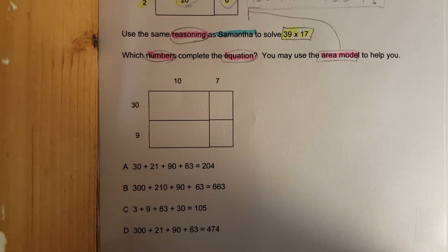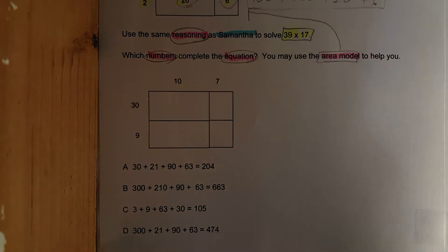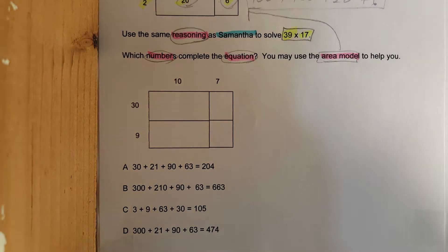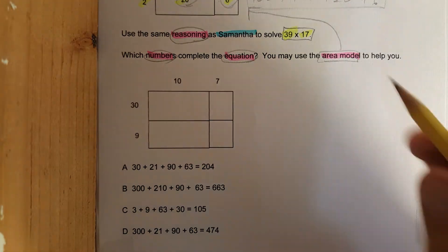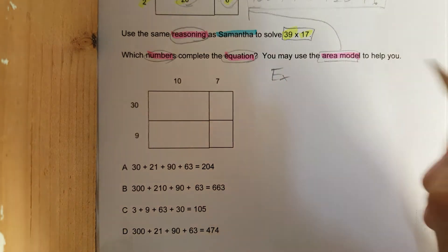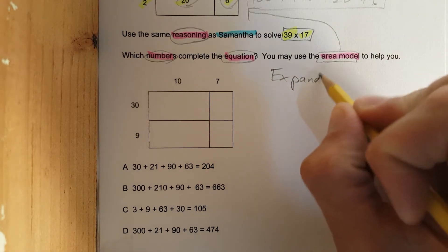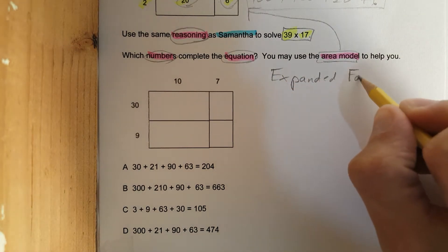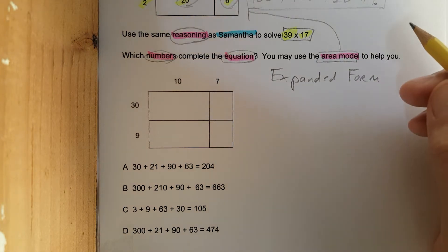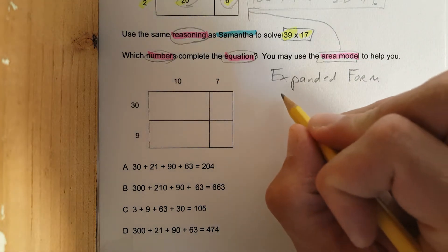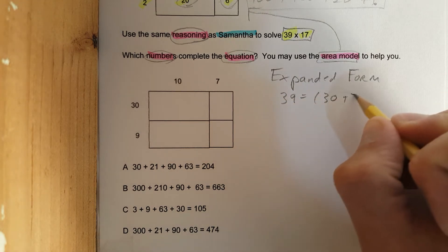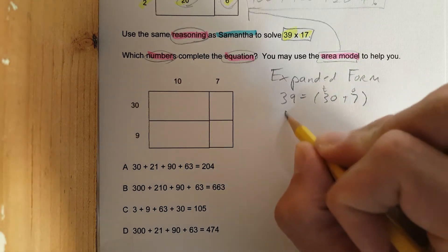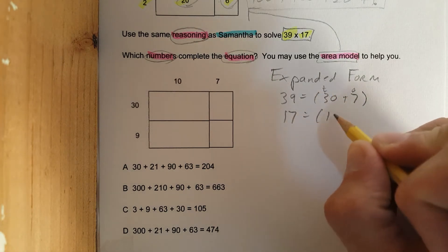So here's all the possible choices. Let's solve it out first. Once again, let's do expanded form. Right now we're at four minutes, let's get going. 39 can be written as 30 plus 9. Remember, break it down to ones, tens. 17 can be broken down to 10 plus 7.